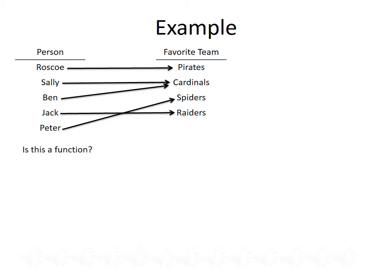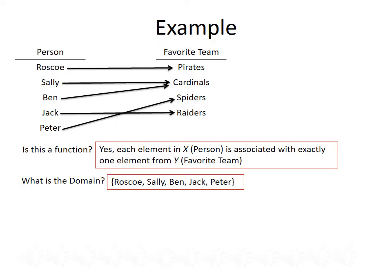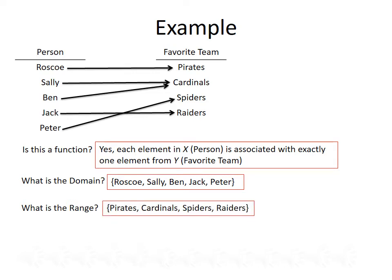Given the two sets above — people and favorite teams — and the relation between them, we should be able to answer: is this representative of a function? And the answer is yes. By definition, each element in x, so people, is associated with exactly one element from y. Since this is a function, the domain will be our list of people: Roscoe, Sally, Ben, Jack, and Peter. And the range is our list of teams: the Pirates, the Cardinals, the Spiders, and the Raiders.